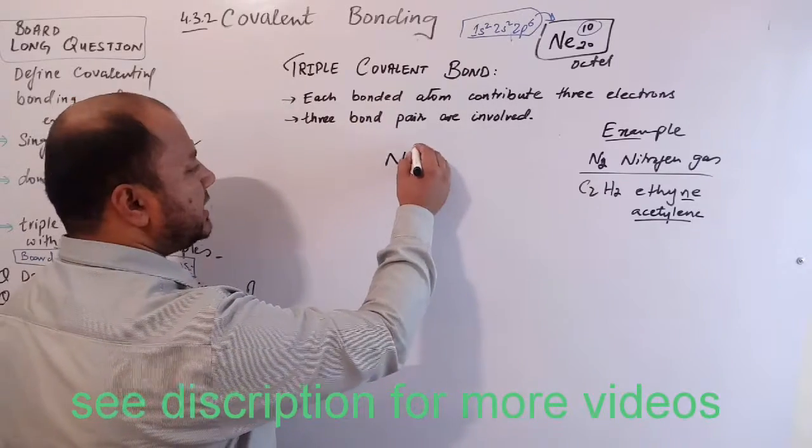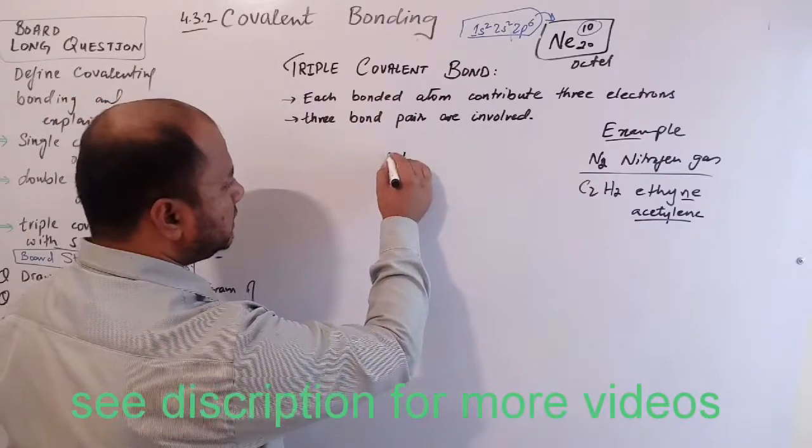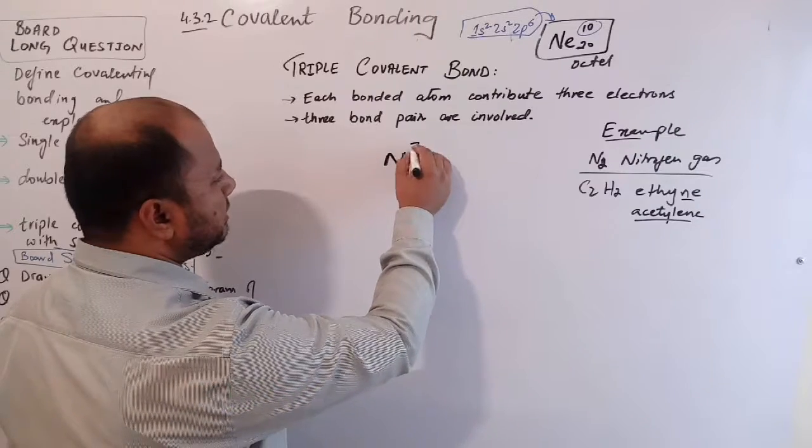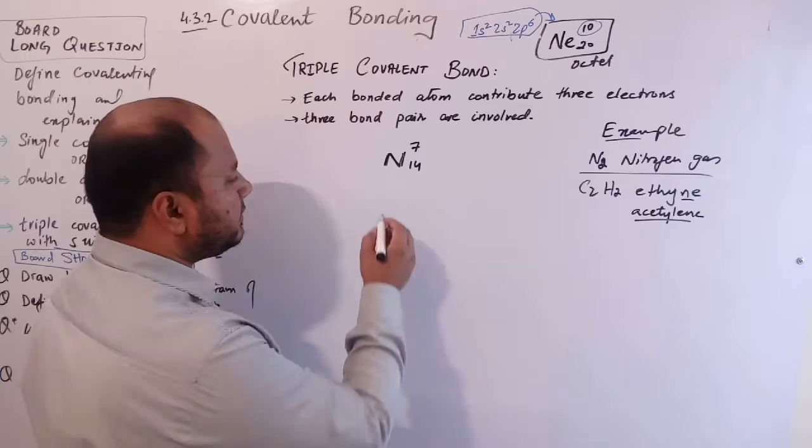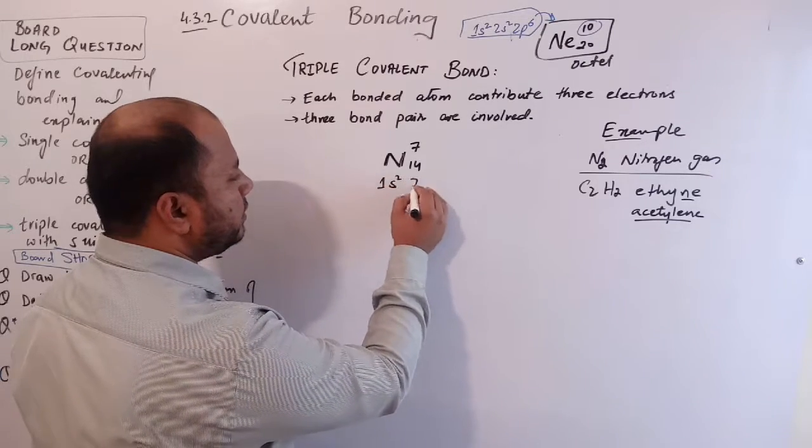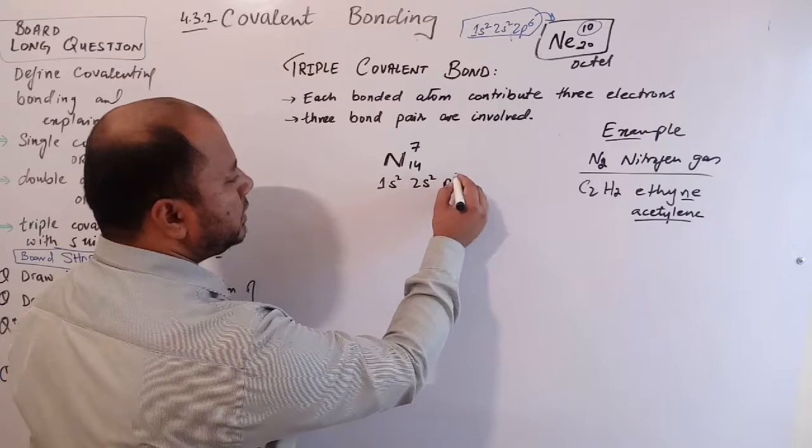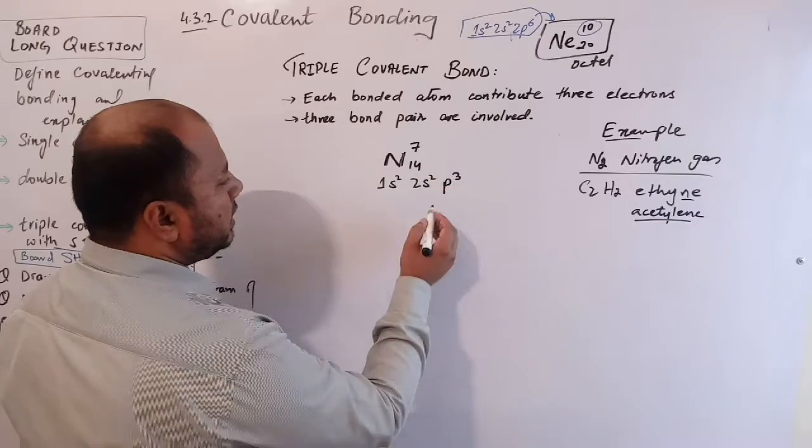Nitrogen gas is the seventh element of the periodic table having atomic mass 14. Its electron configuration is 1s² 2s² 2p³.